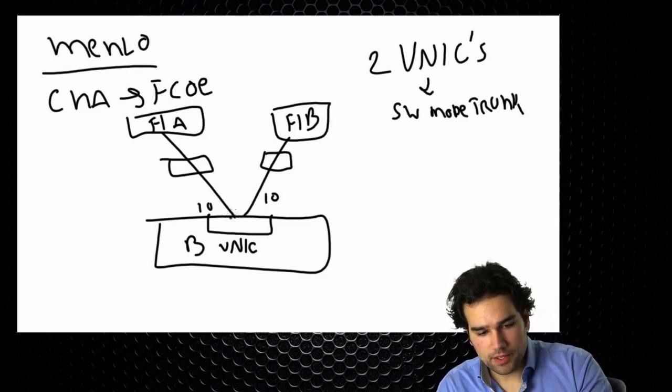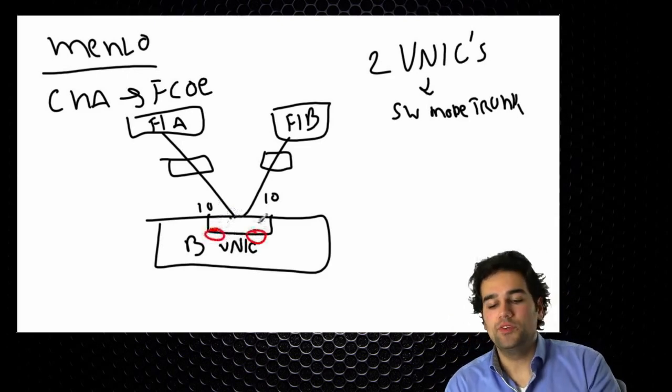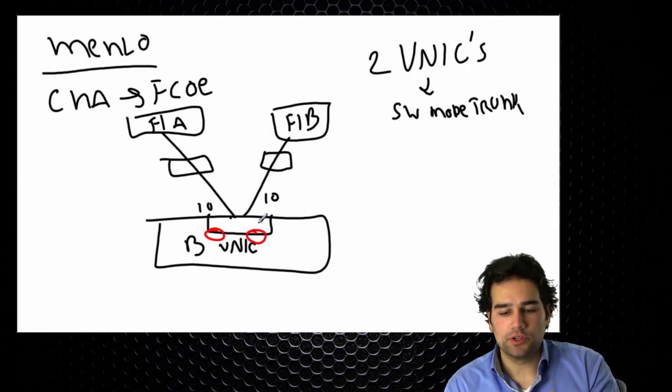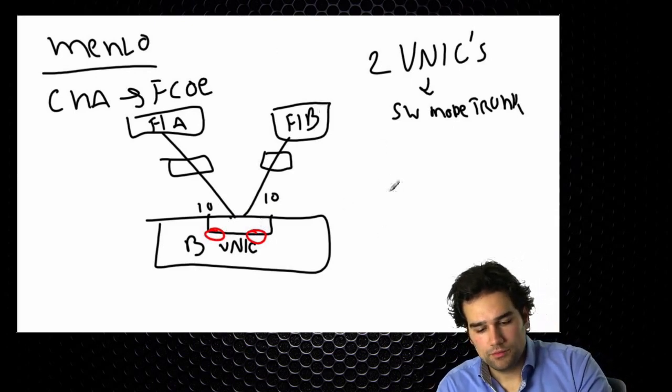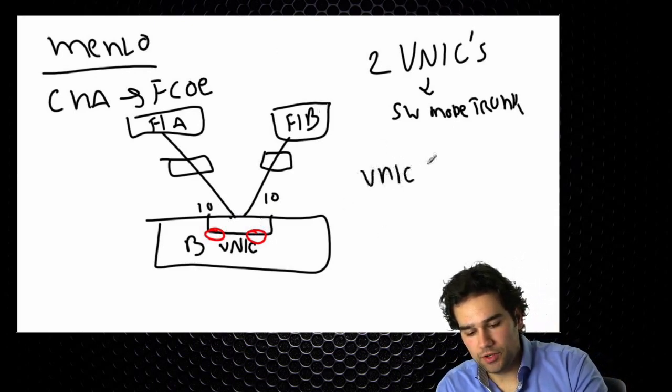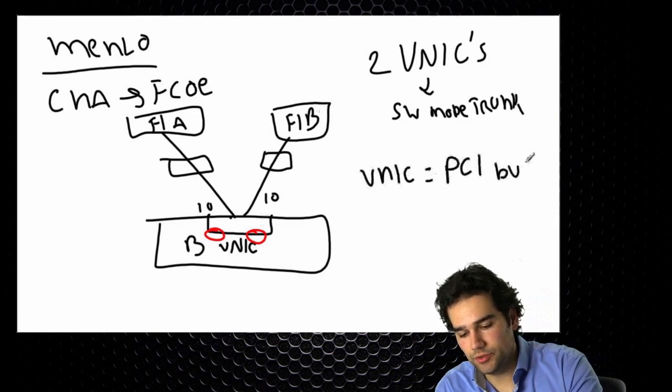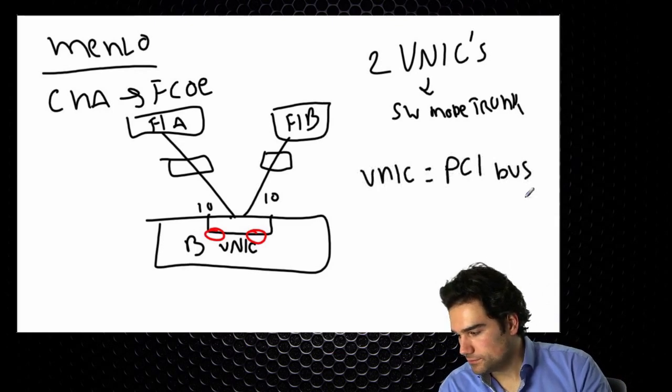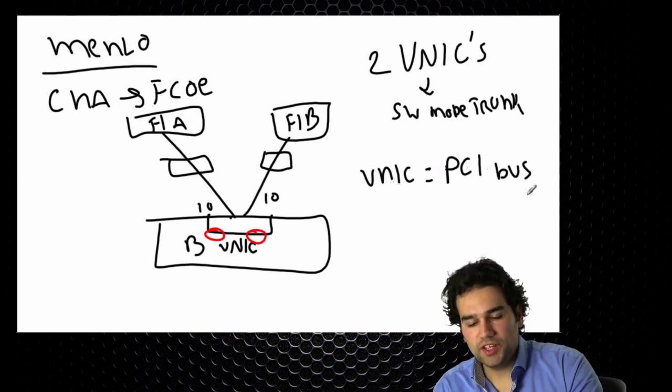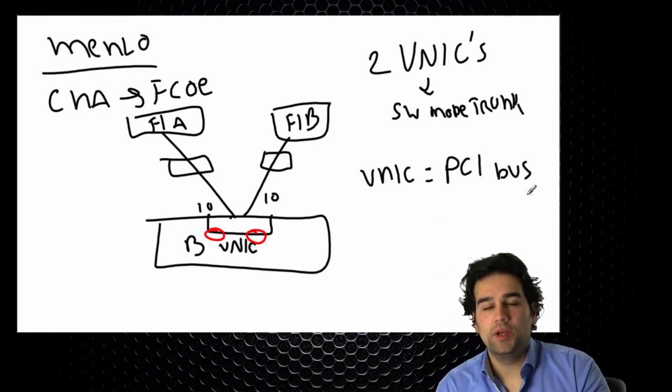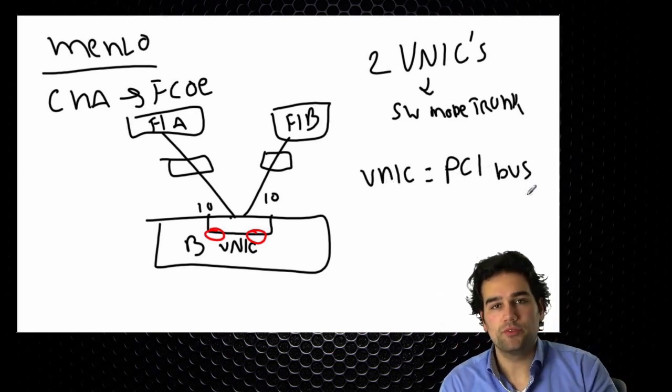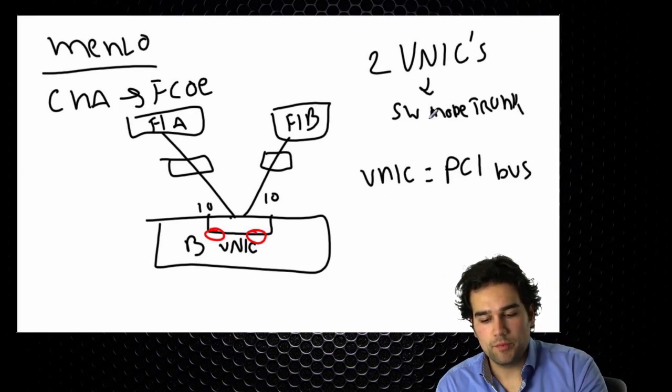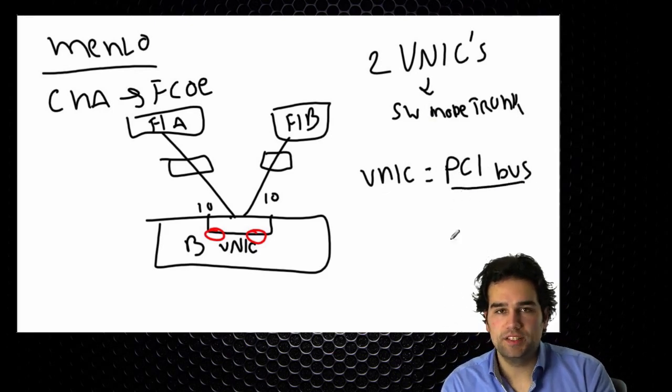So I have one VNIC here and one VNIC there. What I mean with a VNIC is a network card. So a VNIC is a network card on the PCI bus of the server. When taking a look at the PCI bus, so when you're logging into VMware for example, when I have a Menlo card, I see two NICs on the PCI bus.